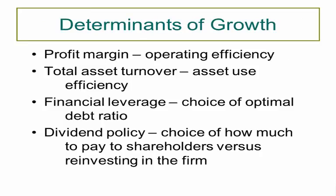This brings me to the determinants of growth. There are a few factors that determine the growth for a company. The first three are all going to increase the growth of a company, and they are the three different aspects of the DuPont identity: profit margin, total asset turnover, and financial leverage. As each one goes up, the growth rate for a company would go up, just like ROE would increase. The dividend policy—how much to pay shareholders versus reinvesting in the firm—if that goes up, then growth would go down. If the dividend payout ratio goes down, growth goes up, because you want a higher plowback ratio or retention ratio where more money is put back into the company. This is a very important slide—I could see a really good exam question coming from this.